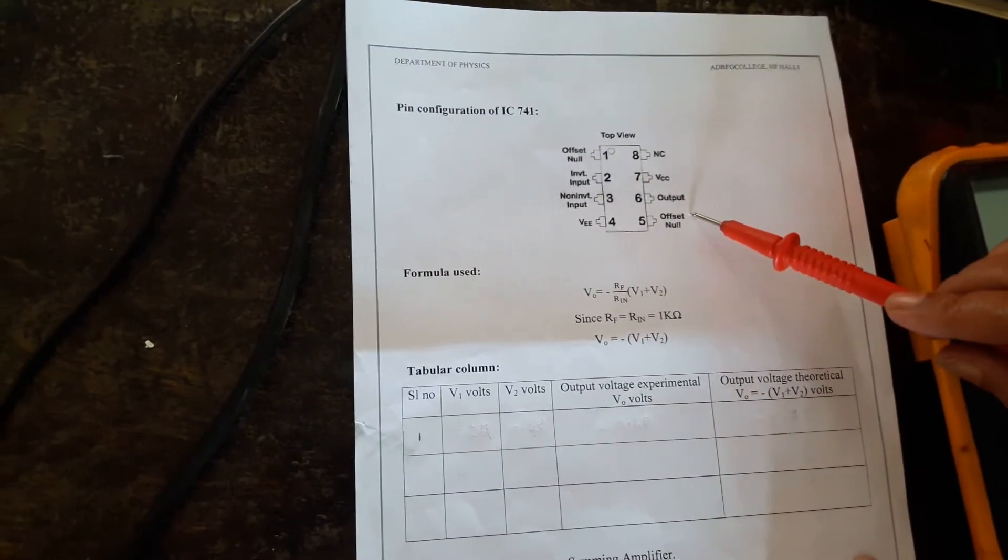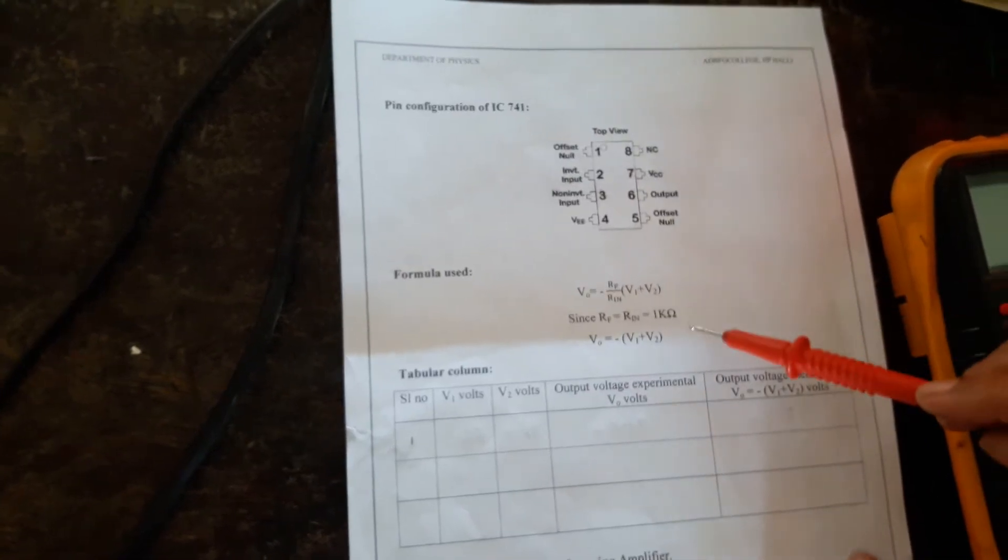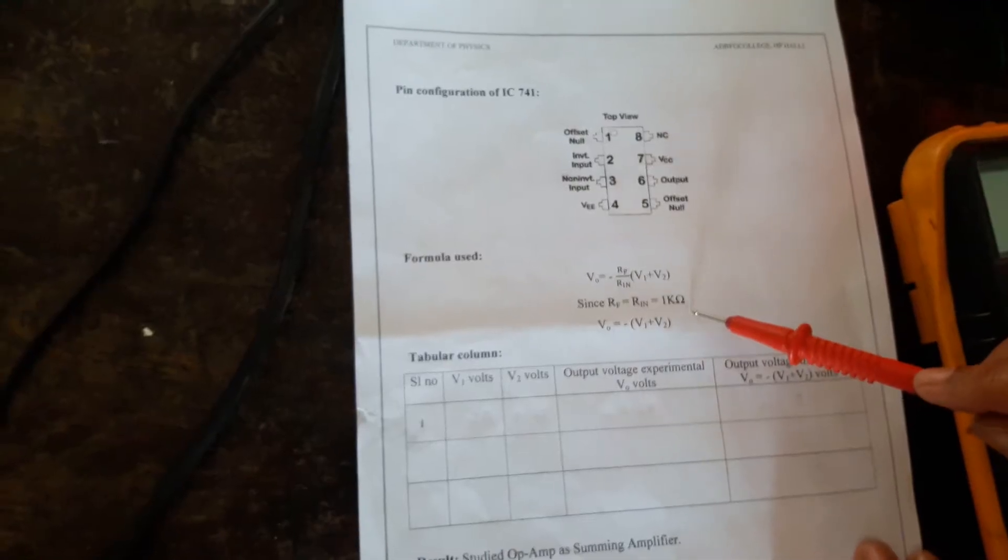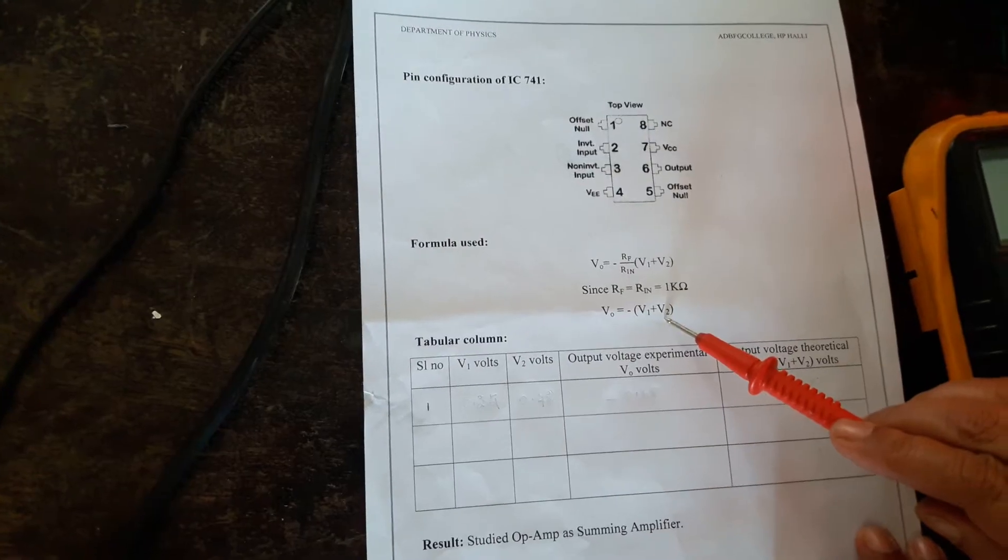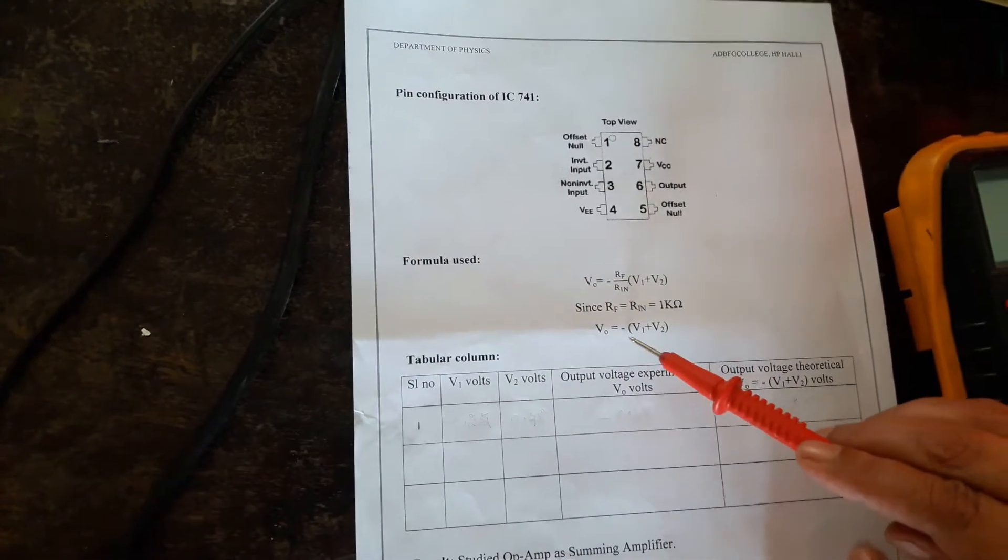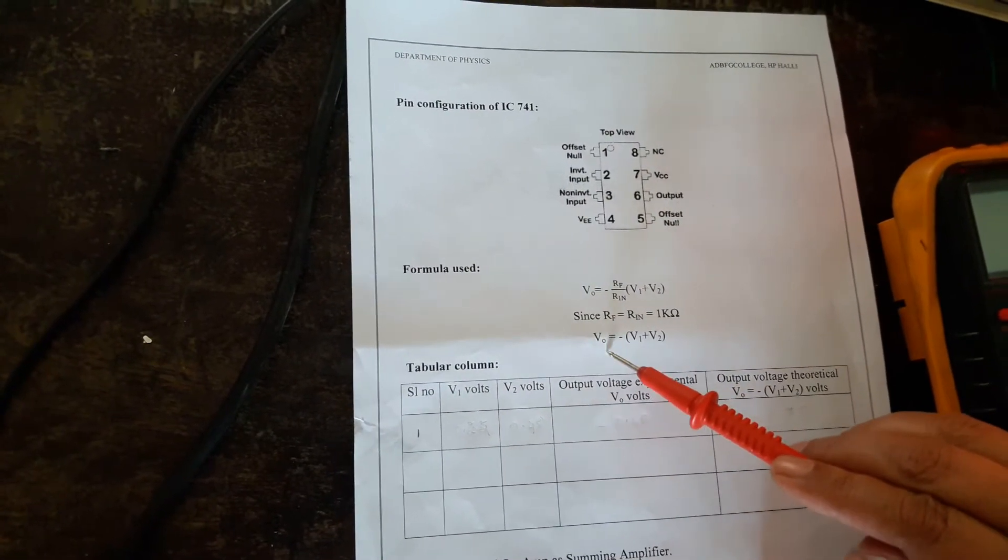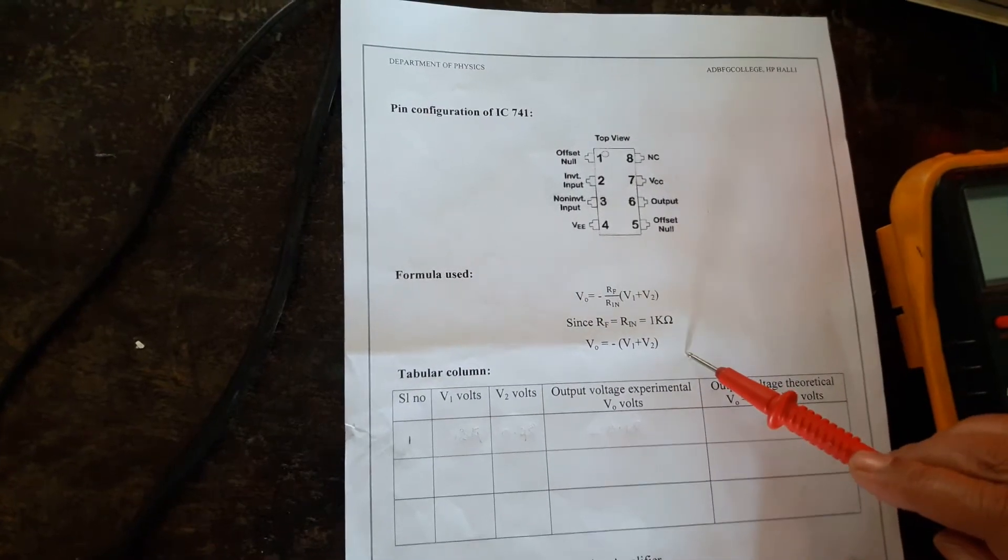This is the pin configuration of IC741 and the theoretical formula. The output of the op-amp will be the sum of the inputs. We are taking two inputs here with the negative sign. This is what we are going to verify in this experiment.